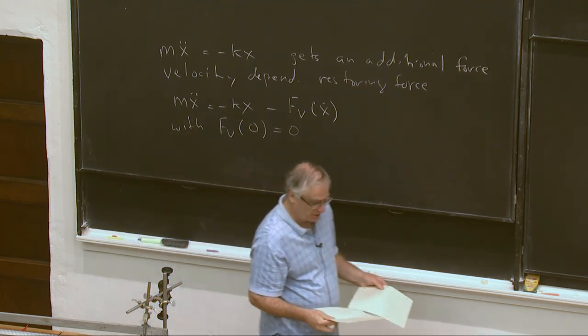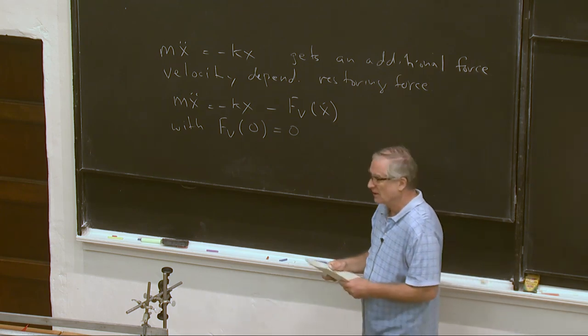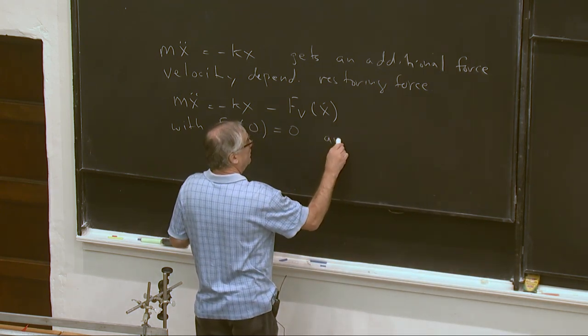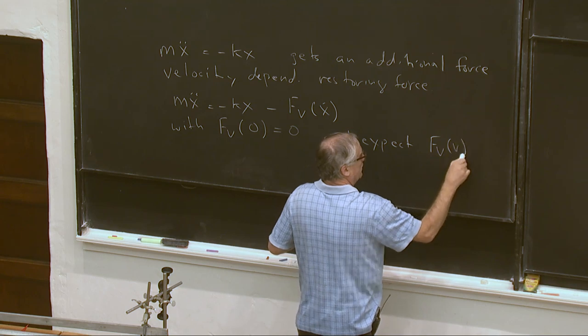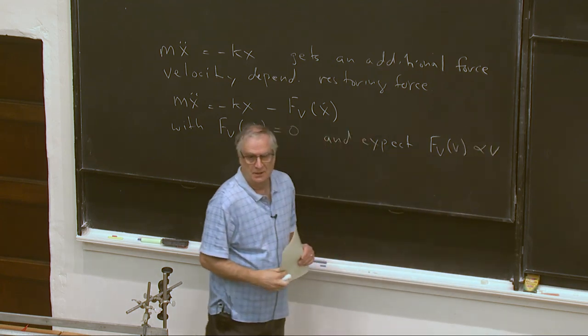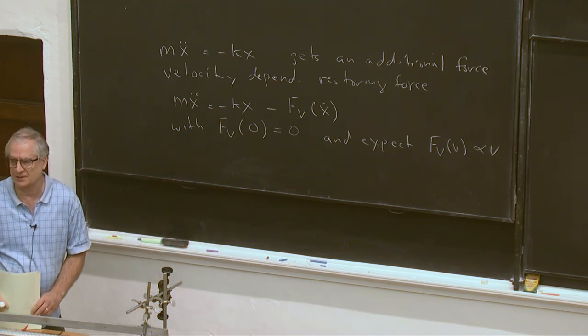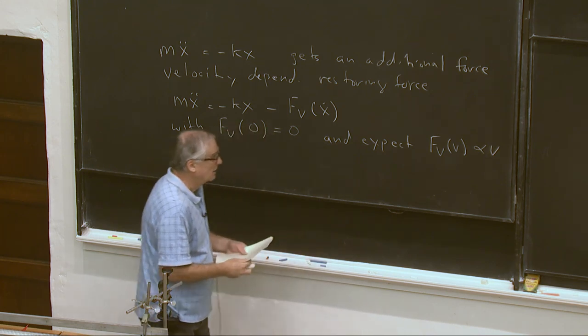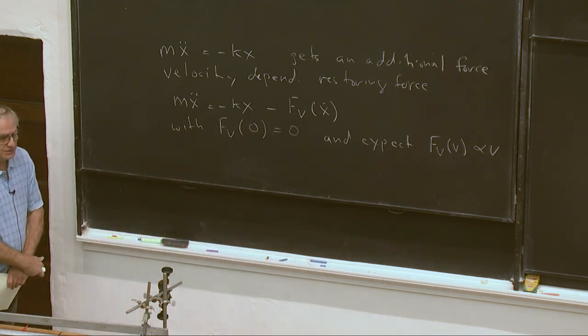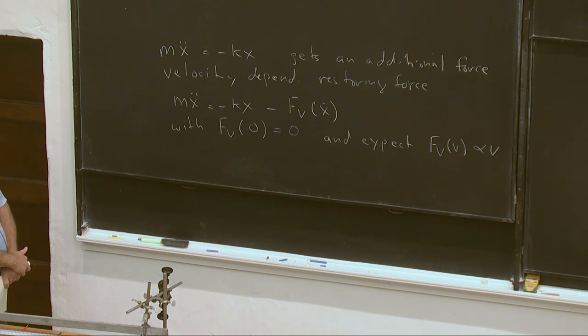Okay. And so, we anticipate here from just thinking about where this force comes from that our velocity dependent force is at least to a good approximation proportional to the velocity. So, we can actually expect that this could be maybe a common theme that other velocity dependent forces, air resistance, air resistance for slow enough motion is proportional to the velocity.